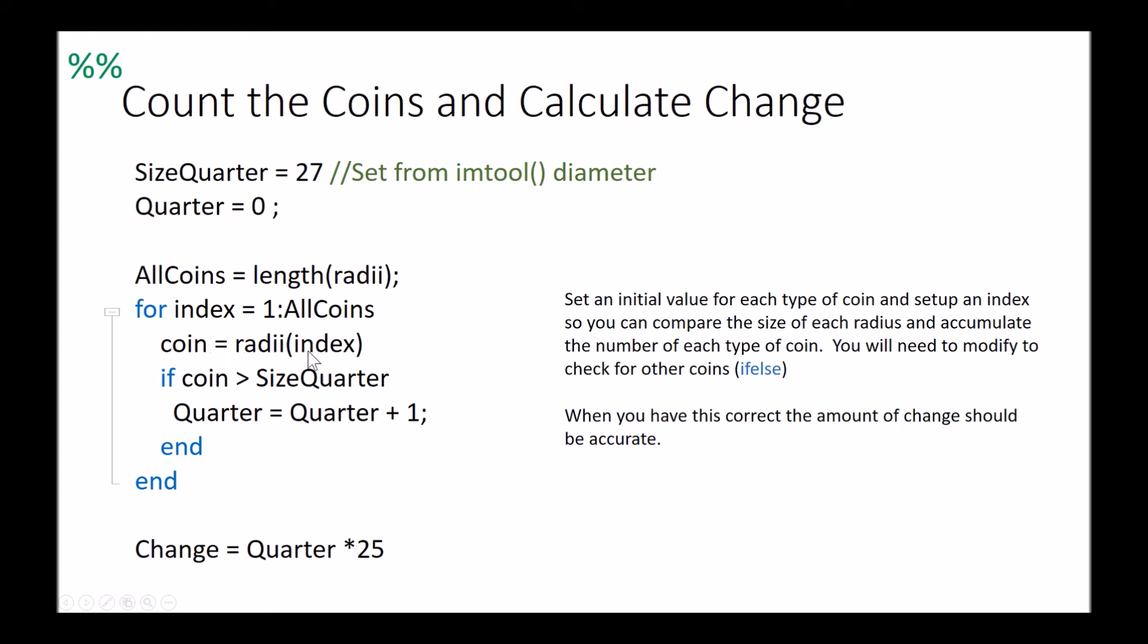We're going to go into coin equals the radii times index, so I'm measuring my first one. We're going to go in and ask, is that coin greater than the size of the quarter, so is that the radius there greater than 27? By doing that, if it is, we're going to take quarter and we're going to add one to it. We end this whole for loop, it goes through and checks all my values.